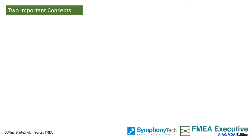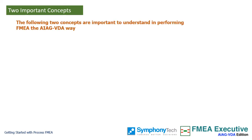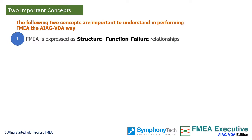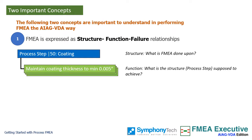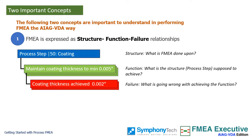There are two important concepts that are fundamental to the FMEA practice. First, FMEA is a collection of structure, function, and failure relationships. Structure is the one upon which you do failure analysis. Functions describe the useful work a structure should be doing. A structure will have multiple functions. Failure tells you what can go wrong in performing the function. A function can fail in multiple ways and thus have multiple failures associated with it.